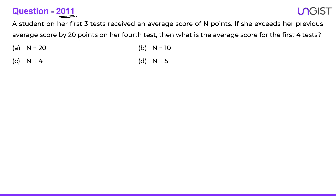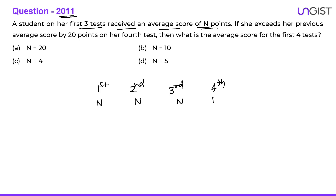In 2011 they asked one question. A student on her first three tests received an average score of n points. So in the first three tests she scored an average of n points. If she exceeds her previous average score by 20 points on her fourth test, she scored n plus 20. Then what is the average score for the first four tests?